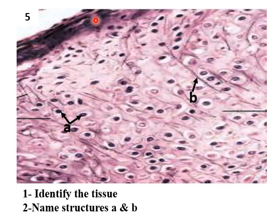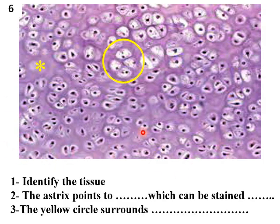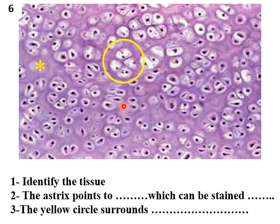Here is yellow elastic cartilage — perichondrium, chondrocytes, and elastic fibers. Another example: this is hyaline cartilage because the matrix is abundant, appears basophilic, fibers cannot be seen, and the cell nest is formed of four cells. The matrix stained with metachromatic stain changes to a different chromatic color — this term was heard before in connective tissue when discussing mast cells.